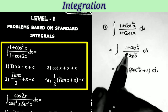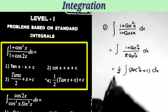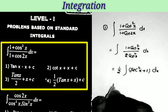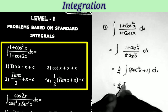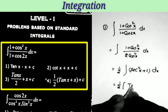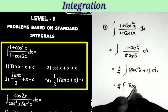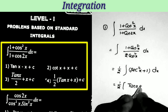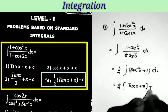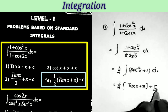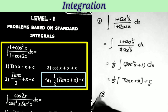Separating the denominator: 1/cos²x and cos²x/cos²x. Now taking the integration: 1/2 into — integral of sec²x equals tan x and integral of 1 dx equals x plus c. So the answer is 1/2(tan x + x) + c, which is the last option.